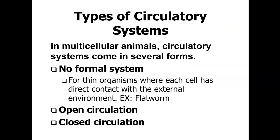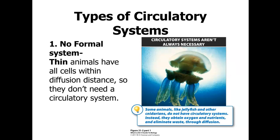Types of circulatory systems in multicellular organisms include: no formal circulatory system, for thin organisms where each cell has direct contact with the outside — such as flatworms, using simple diffusion; an open circulatory system; and a closed circulatory system. Animals like jellyfish, which lack a structured circulatory system, also fall into this no-formal category.